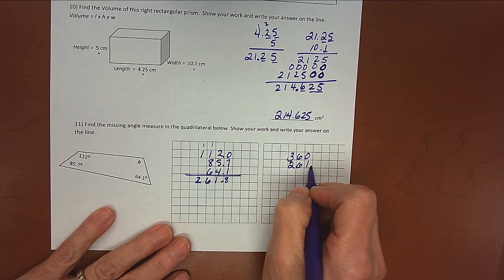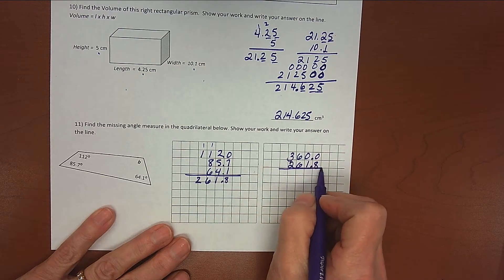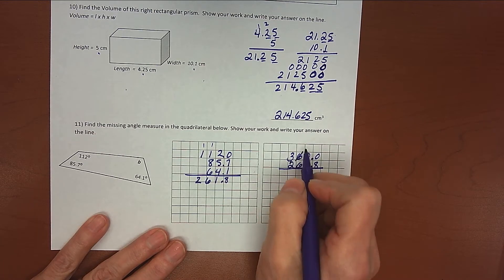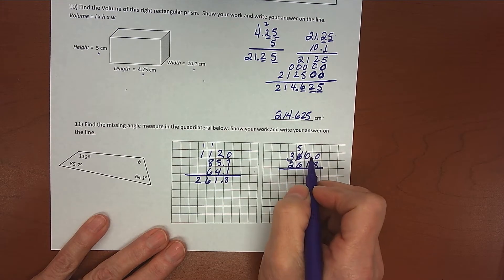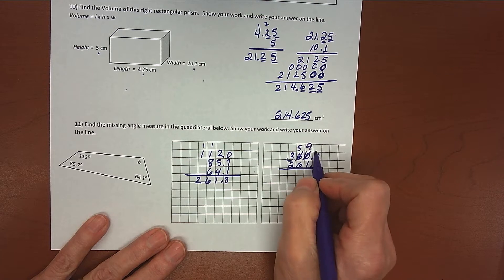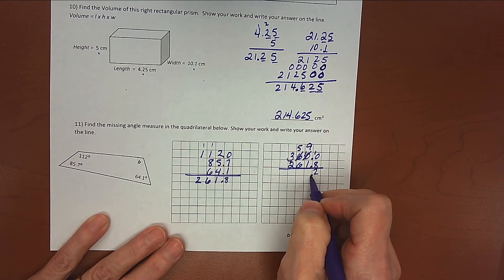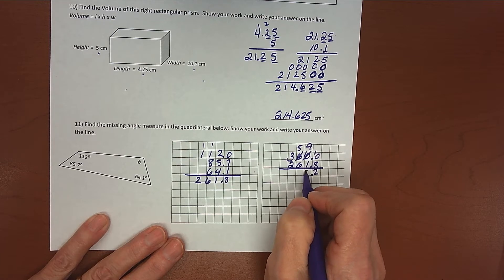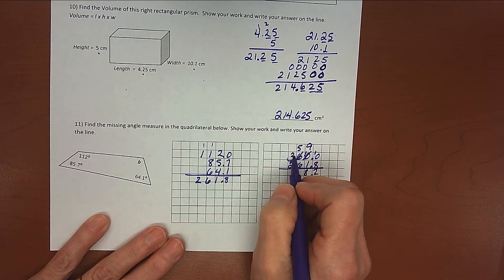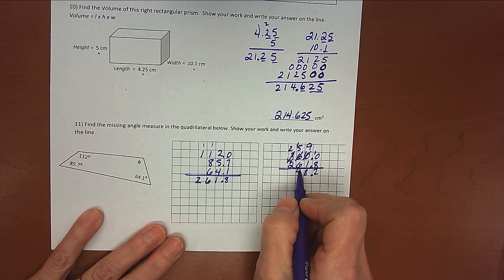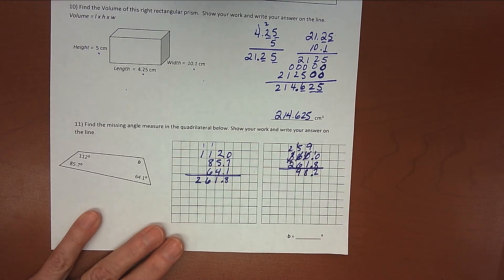So 261 and 8 tenths. I add a decimal and a 0 to the end of my 360. I can't subtract from 0. There's nothing to borrow from here. So go way over here and borrow. Make that one a 10. Borrow from that one. Make that a 9. And finally make this one a 10. 10 minus 8 is 2. Bring my decimal point down. 9 minus 1 is 8. Can't take 6 away from 5. Have to borrow here and make that a 15. 6 from 15 is 9. And then 2 from 2 is 0.